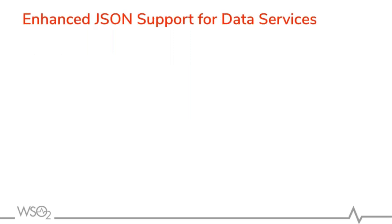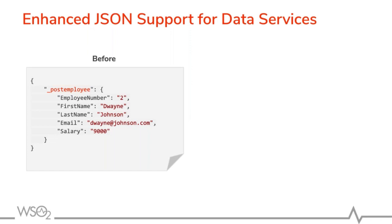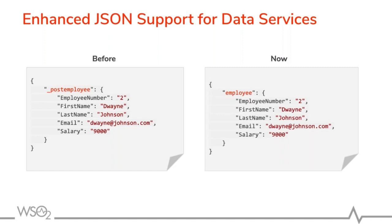We have also enhanced JSON support for data services. We changed the request format so that when data services are exposed as REST services, previously you had to prefix requests with the HTTP method such as POST or PUT. We have removed that burden so you can simply send the request without prefixing it with the method. We have done the same for batch requests — previously each request within a batch had to be prefixed with the method, but now you can simply send the request in the format you want.